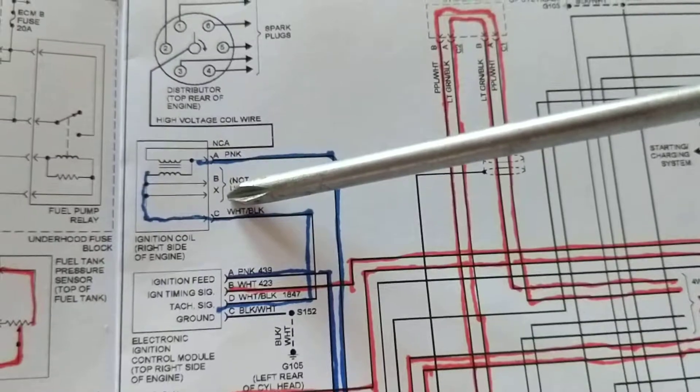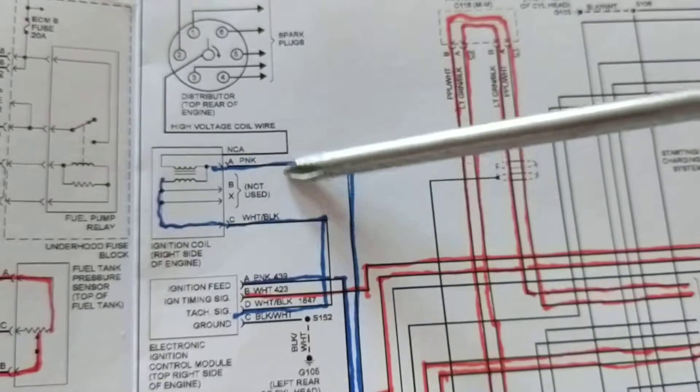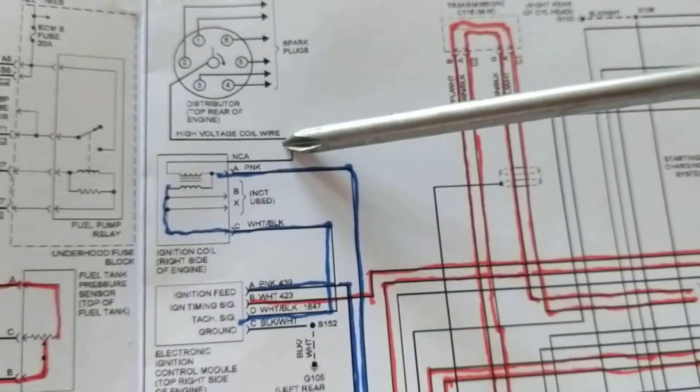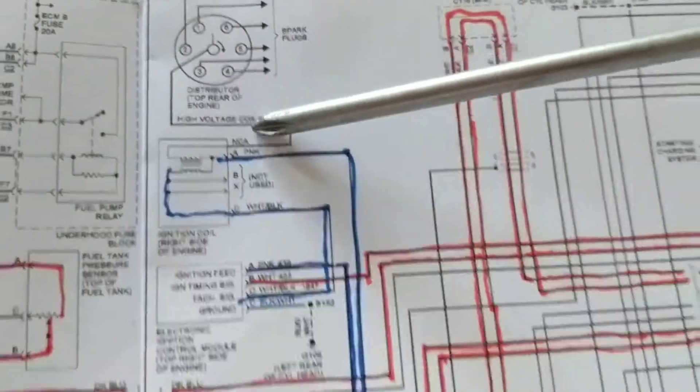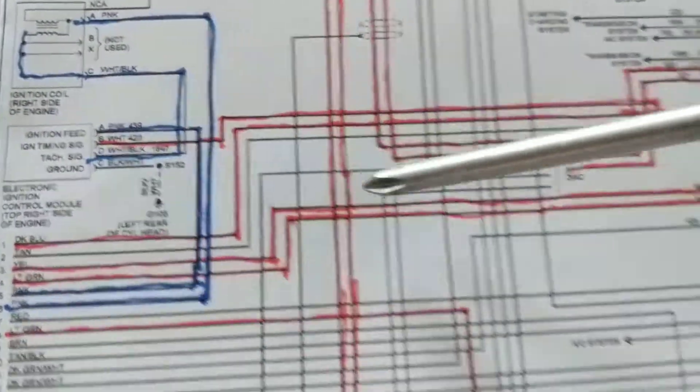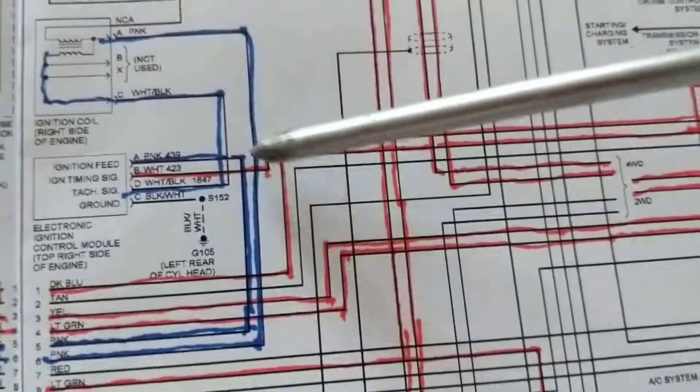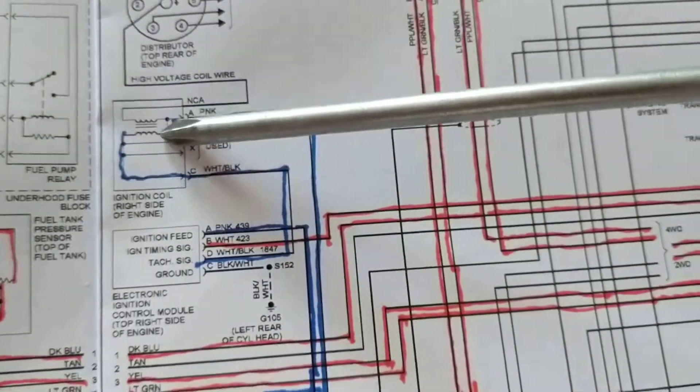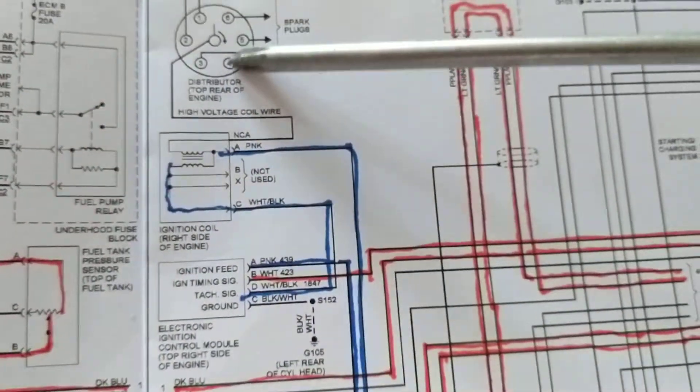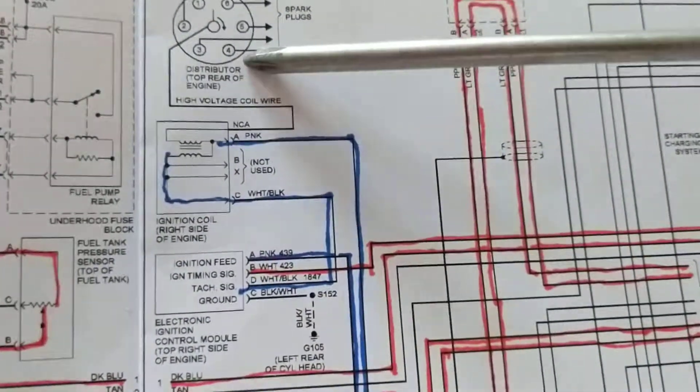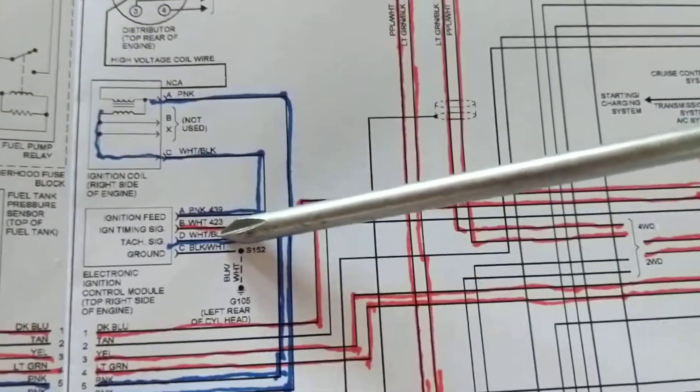We have to find out, is it fuel related, is it spark related? If we get B plus over here, we need - remember what I talked about in my other module - we need the PCM to turn the primary on and off, and that will dictate when the spark is activated. This is for timing.